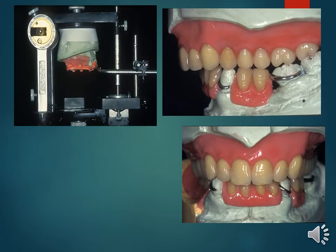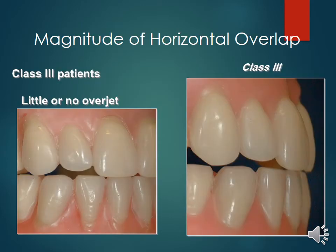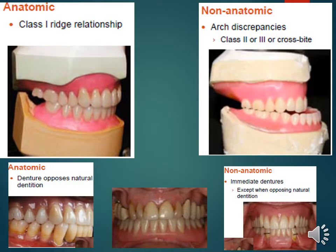In a class 3 maxillomandibular relationship, tooth position is required outside the normal ridge relation to obtain phonetics and articulation — that is to say, a crossbite with anterior or posterior tooth position not supported by the residual ridge. In class 3, little or no overjet will be present. Non-anatomical posterior teeth are also used for class 2 and class 3 relationships.